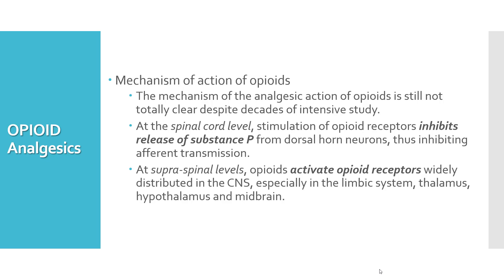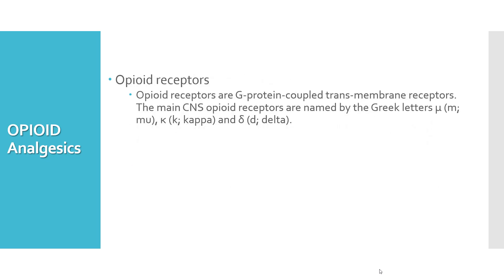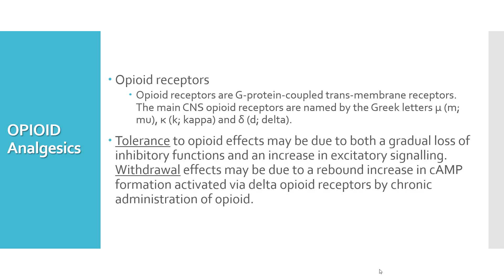There are three types of receptors: mu, kappa, and delta receptors, each with different distribution and different actions. Tolerance to opioid effects develops very quickly and may be due to both a gradual loss of inhibitory functions and an increase in excitatory signaling. Withdrawal from opioid analgesia is also a very common problem, and these effects may be due to a rebound increase in cyclic AMP formation activated via delta opioid receptors.